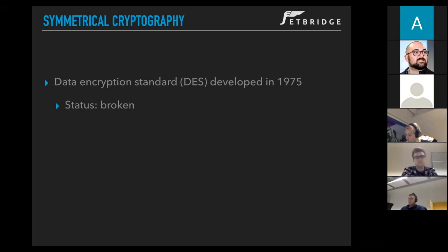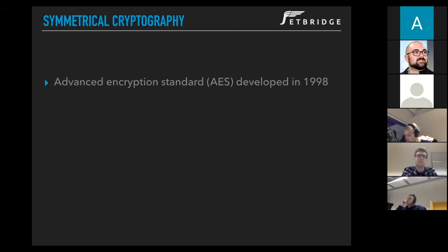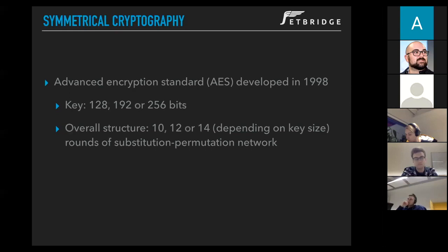Eventually DES was broken, and NIST again needed a reliable encryption standard. This is where the Advanced Encryption Standard comes in, developed in 1998. AES is also a block algorithm, but in certain implementations, previously encrypted blocks are part of the encryption for incoming blocks.